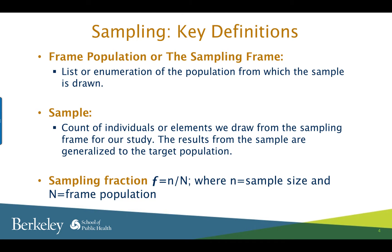Continuing with our definitions, let us understand sampling frame. The sampling frame or the frame population is the list or enumeration of the population that represents your target population and from which the sample is actually drawn. If you want to study the sleeping behavior of all adults in the city of Berkeley, your sampling frame can be a list of adult household members in Berkeley with a telephone. Likewise, a list of addresses, schools, hospitals, a registry of patients, etc. can be a sampling frame. A sample is the count of individuals we draw from the sampling frame for our study. A sampling fraction is the proportion of elements you sample from that sampling frame.